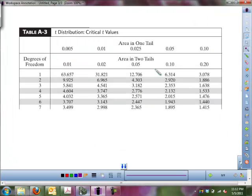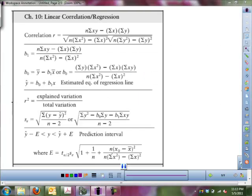This is a piece of our T distribution table. The area and 2 tails of 0.05 and our degrees of freedom is 4. So, it looks like our critical value is 2.776. So, let's start off with that.